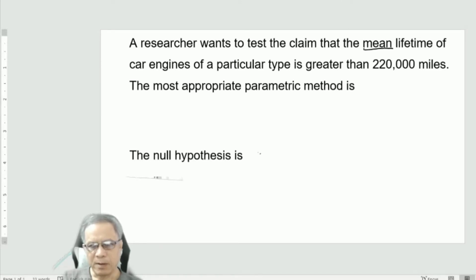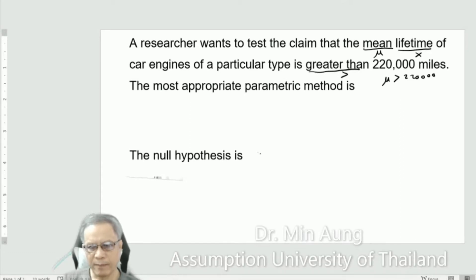A hypothesis: mean mu, lifetime variable x, greater than. So mu of x, or in short mu, is greater than 220,000. Then this is, if you see greater than, just put Ha.